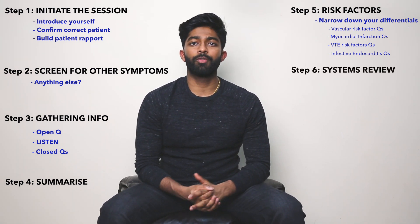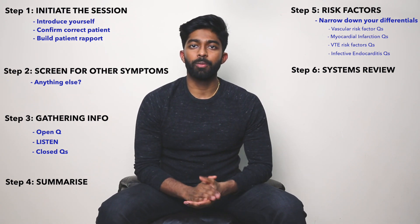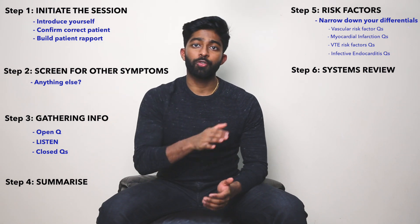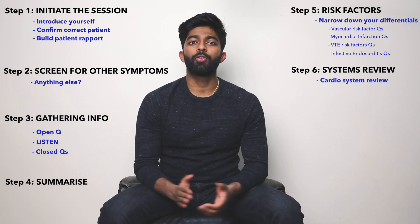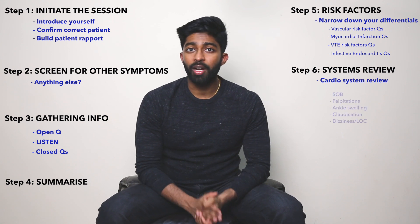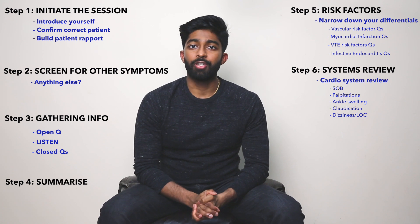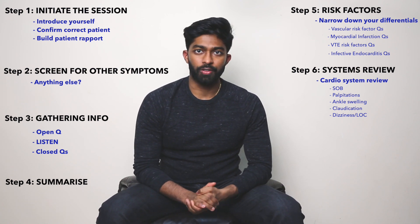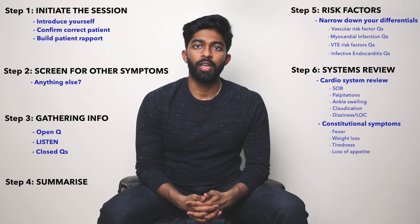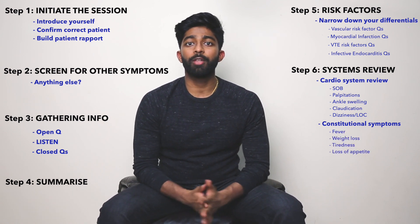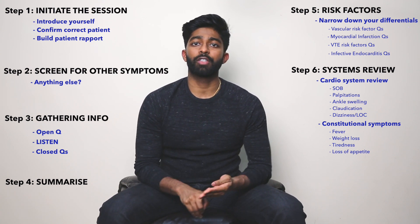Step six is your systems review. This is where you do a body system screen of symptoms to catch anything you might have missed in your initial screening. For a cardiovascular history, systems review questions would be: do you ever feel short of breath, feel your heart racing, any ankle swelling, any leg pain on walking, do you ever feel dizzy or have you lost consciousness? I also like to ask about constitutional symptoms — fever, weight loss, tiredness, and loss of appetite — which can affect any body system.